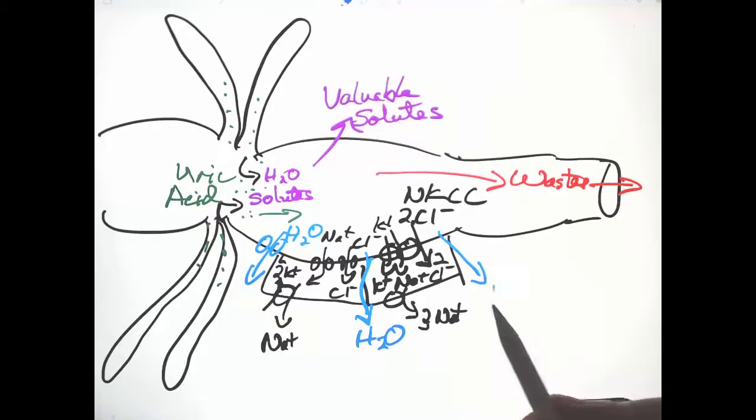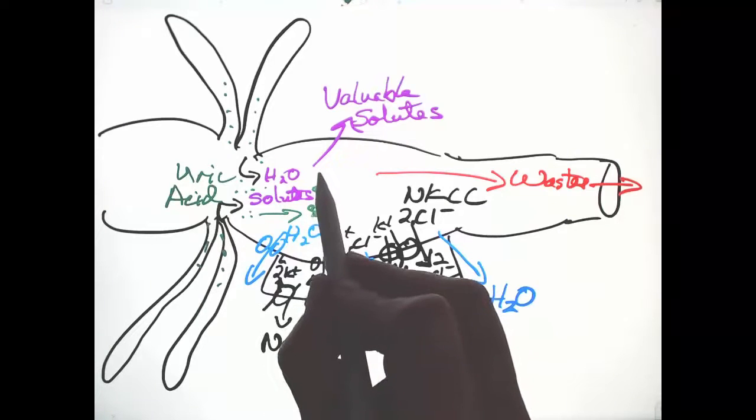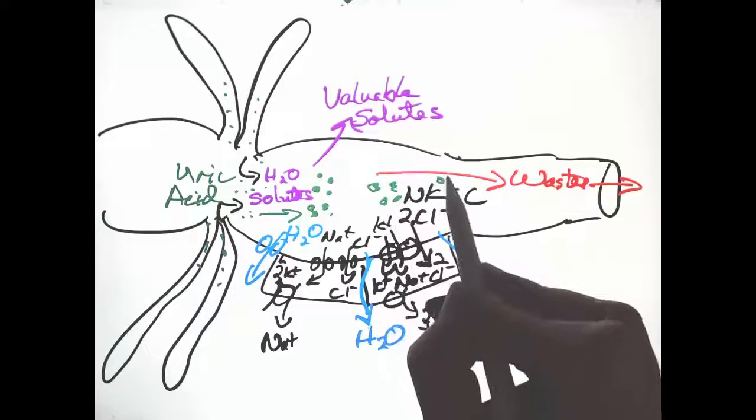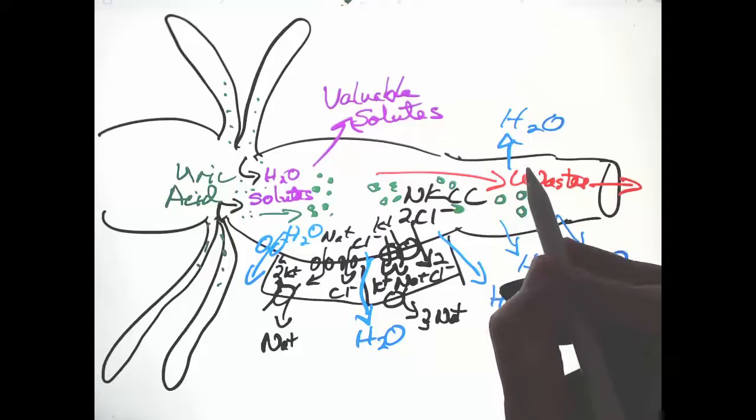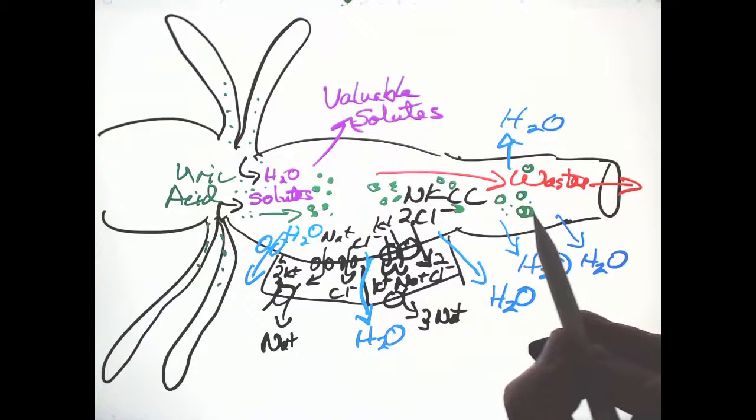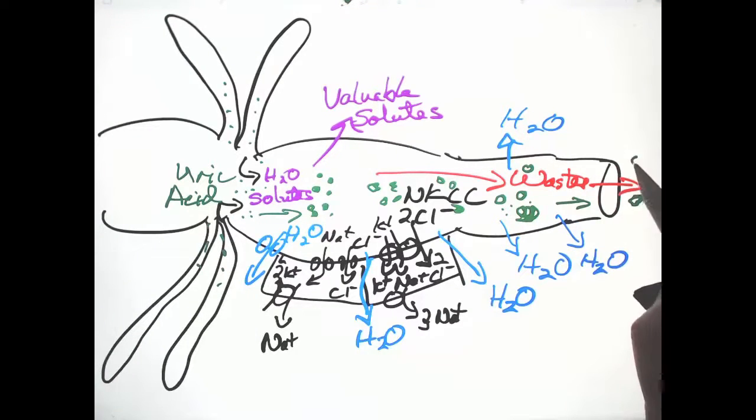Once uric acid reaches saturation, the highest concentration it can be without crystallizing, it starts forming growing crystals. As we get further and further, more water is recovered. As the crystals grow, each uric acid that joins a crystal is no longer a free solute. So the concentration of free uric acid never gets any higher. As water is taken out, the crystals just grow bigger and bigger, until what is excreted is dry waste with large uric acid crystals.